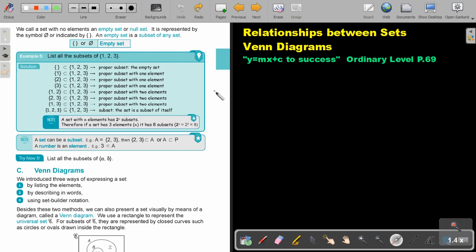Stop the video and do try now 5. You can continue the video as soon as you are finished. List all the subsets of A, B. Now this is a bit easier because there's only two. So let's just start there. So if I start, let's just take another color.